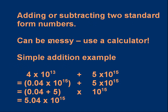Now let's look at addition and subtraction — this can be a bit messy, and using a calculator reduces the risk of mistakes. For the basic method: take 4×10¹³ added to 5×10¹⁵. The problem is the different powers of 10 — 13 and 15. The trick is to change one number so it has the same power of 10 as the other. We'll change 4×10¹³ into something times 10¹⁵ by multiplying by 100.